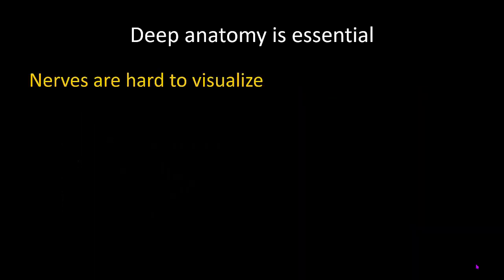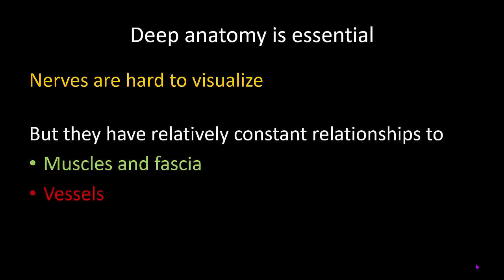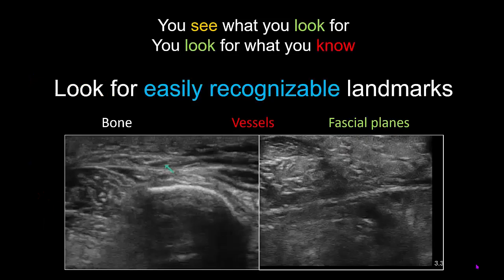Nerves are not always easy to see and identify. However, they have relatively constant anatomical relationships to muscles and fascia, to blood vessels and to bone, and these are easy to see and identify. So always start any scan by knowing and looking for these easily recognizable landmarks of bone, vessels, or fascial planes.